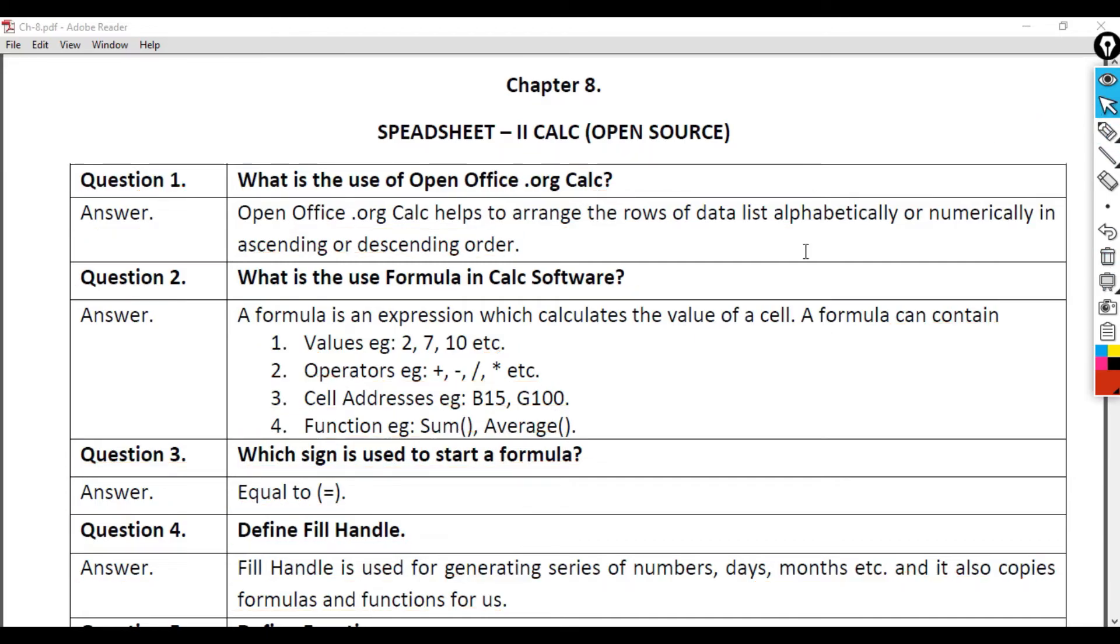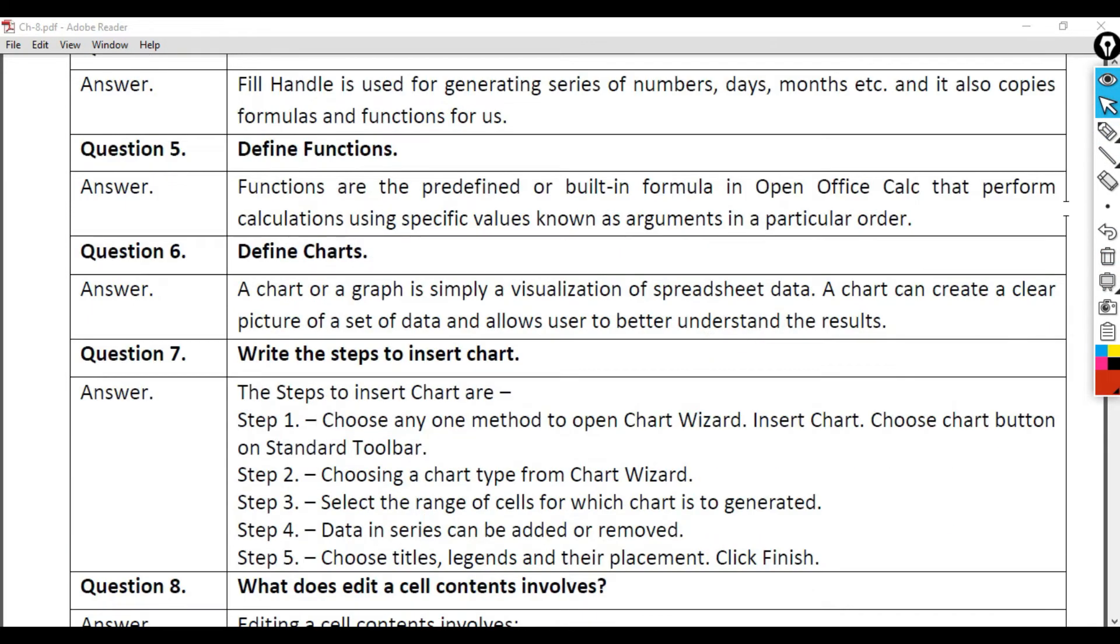Question 5: Define Functions. Answer: Functions are predefined or built-in formulas in OpenOffice Calc that perform calculations using specific values known as arguments in a particular order.